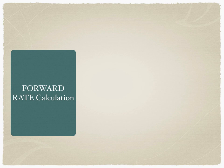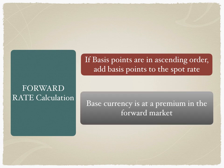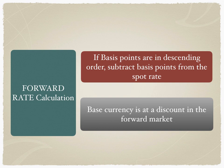The forward rate calculations have some simple rules. The first rule: if the basis points are in ascending order, we add the basis points to the spot rate. In our example, the basis points were 66/67, so the ask was higher than the bid — the base currency is at a premium in the forward market, so we added the basis points to the spot rate. If, on the other hand, the basis points are in descending order — say 65/63 — we subtract the basis points from the spot rate, and the base currency is at a discount in the forward market.